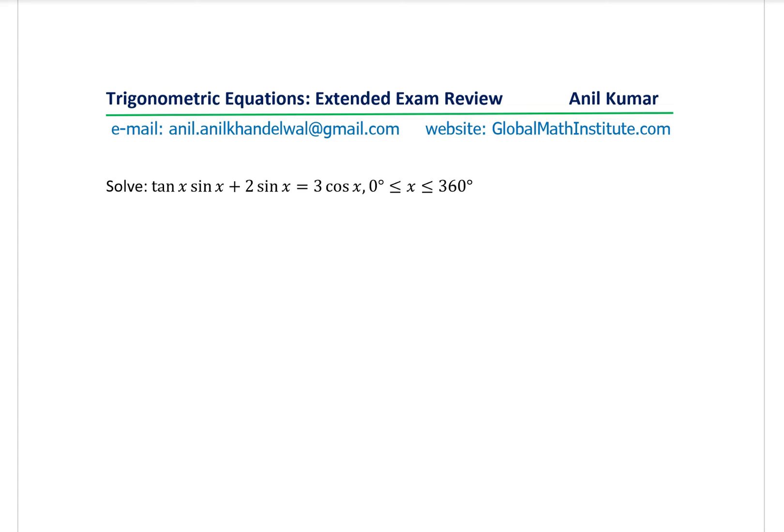The question here is solve tan x sin x plus 2 sin x equals to 3 cos x, where x is between 0 and 360 degrees. So amongst Trigonometric Equations, when you have a combination of sin, cos and tan, all three of them, it becomes a bit difficult. We will see how to solve such equations in this particular video.